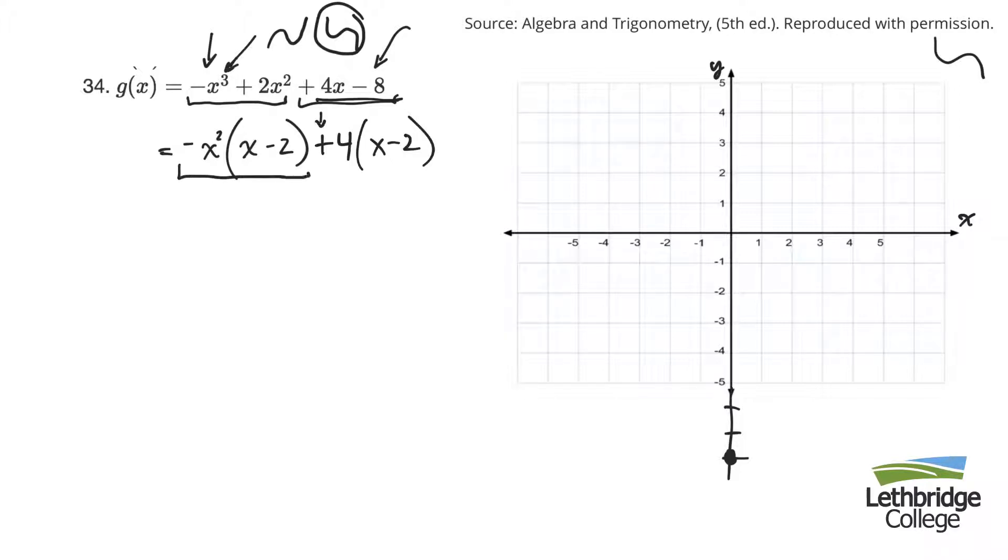So if here I have a term, and here I have a term, what's common is an x minus 2. So I can factor the x minus 2 out, and that leaves me with negative x squared plus 4. I want to make that a difference of squares, but right as it sits, I can't do it. But if I were to factor negative 1 out of that, I'd be left with x squared minus 4. Then I could do a difference of squares with that.